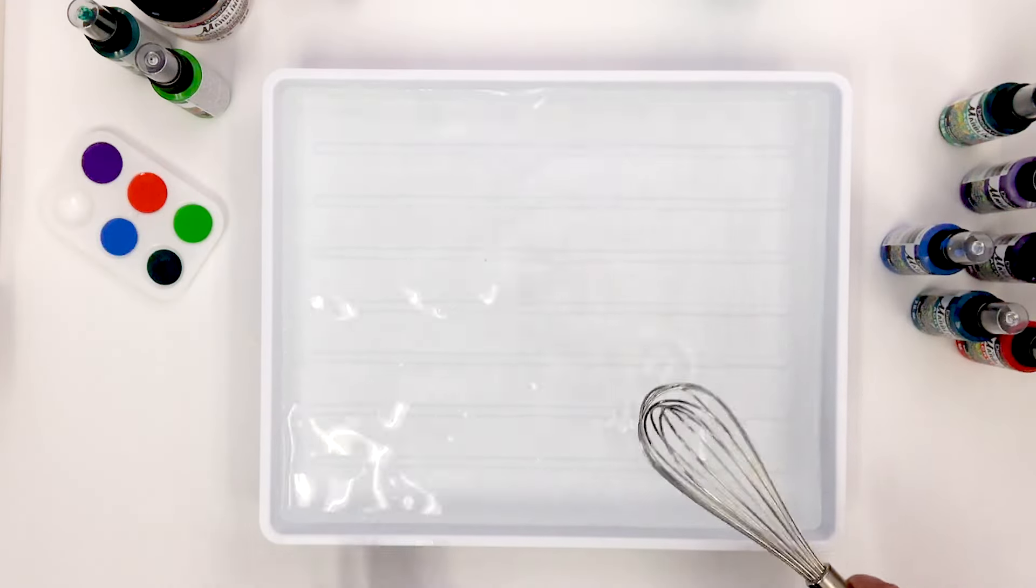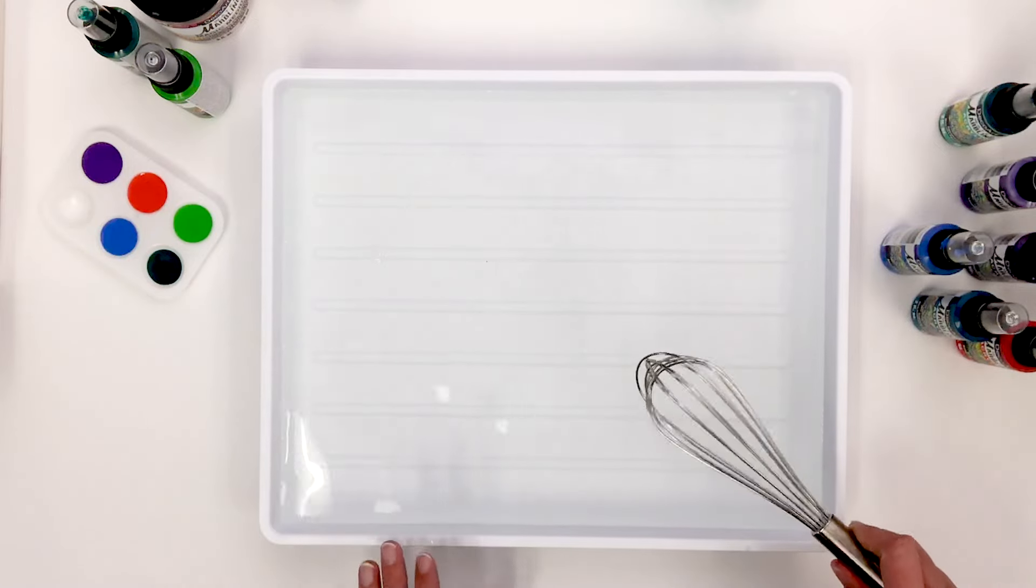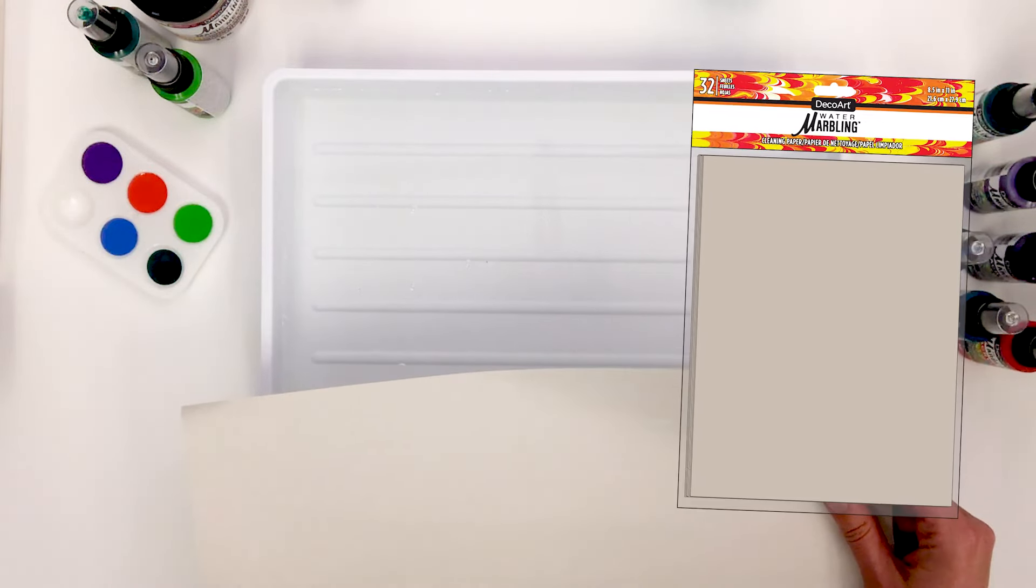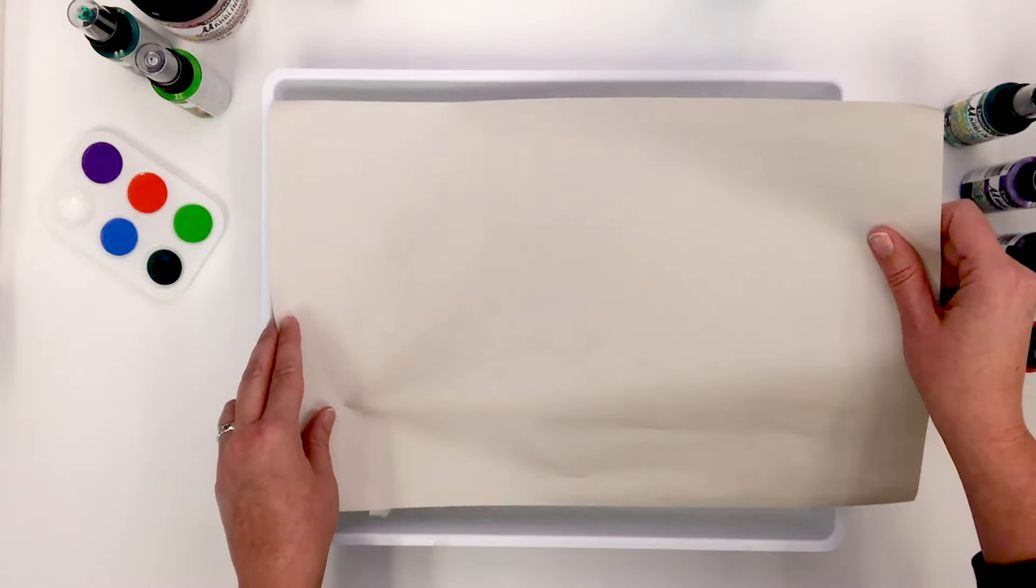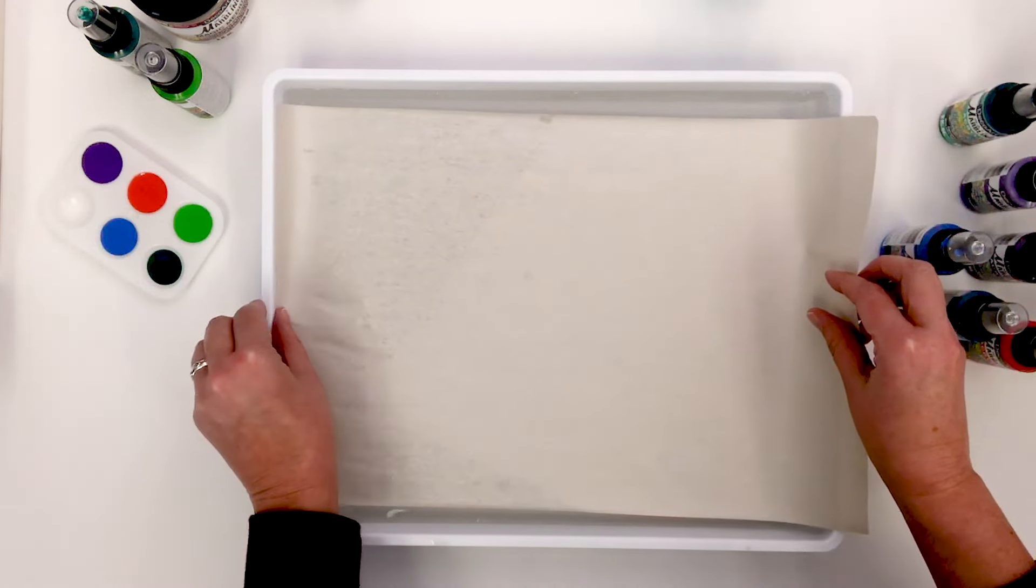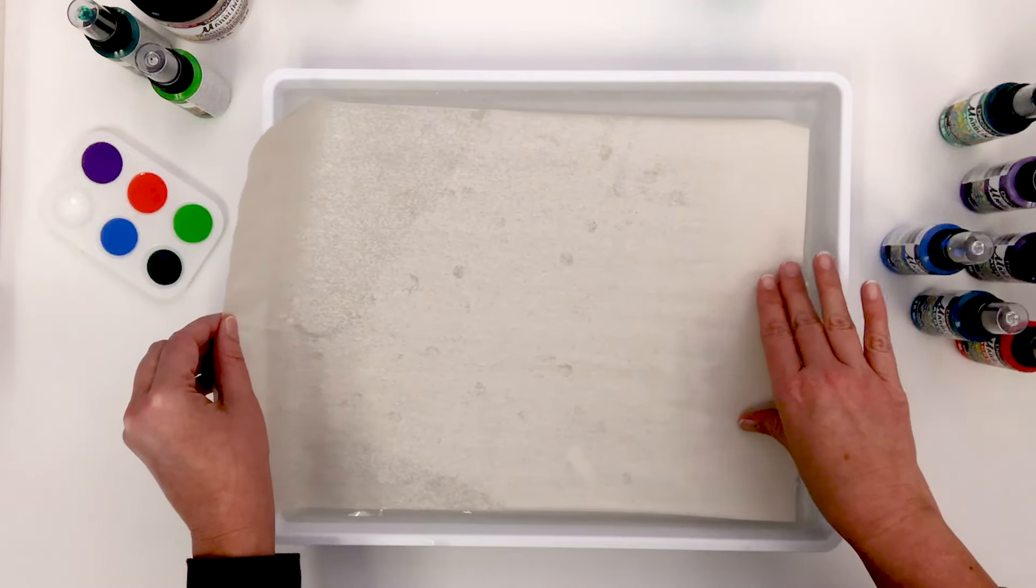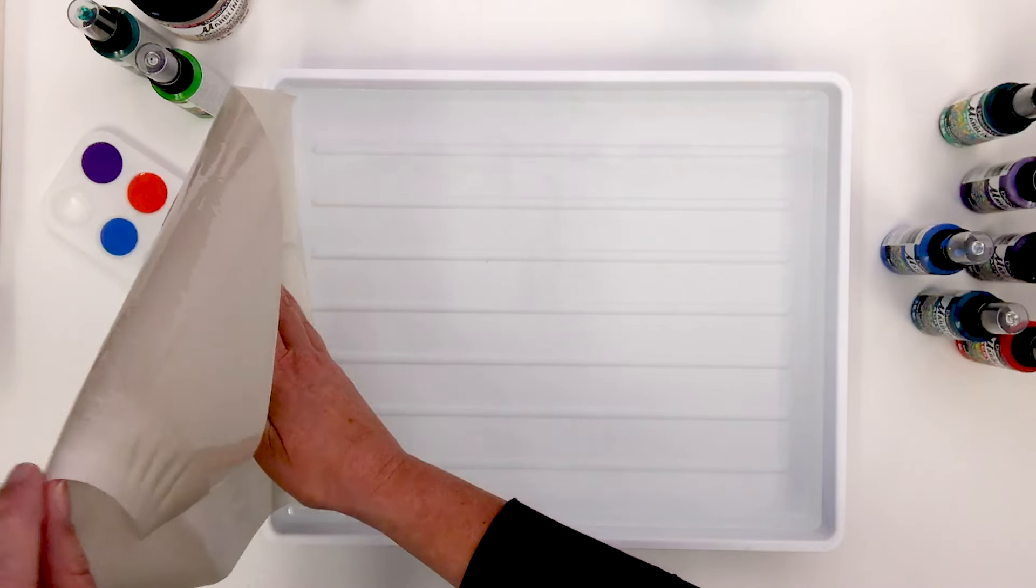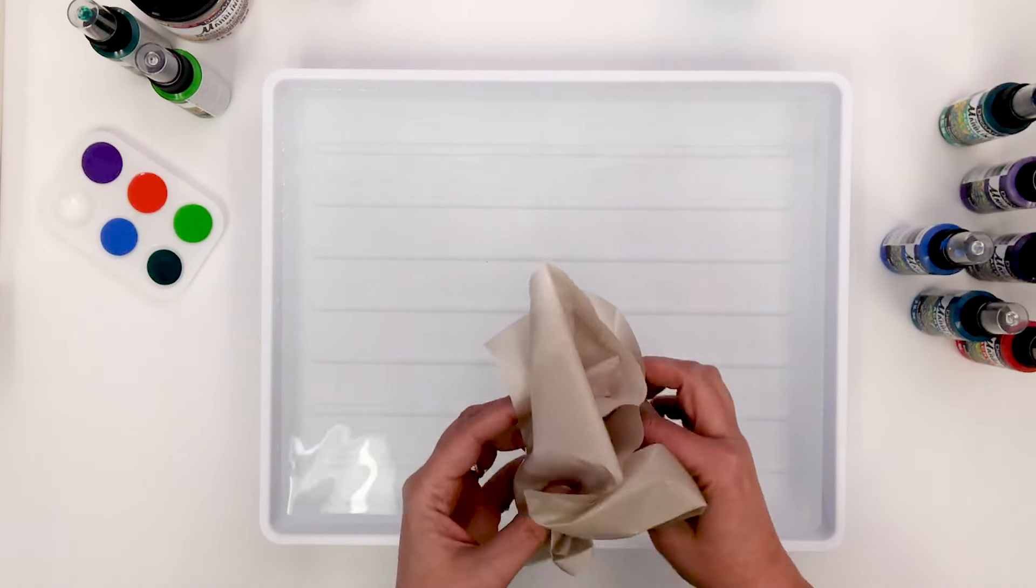Once the 20 minutes is up, whisk again to ensure the Magic Medium is completely blended into the water. Before we start creating our design, we're going to clean the size surface. Use a cleaning paper to float across the surface of the size to remove any particles or dust. Press the paper down gently onto the size. Slowly pull across the surface. Pop any bubbles you see on the surface with the marbling stick. Now you're ready to start marbling.